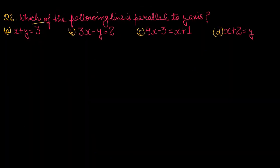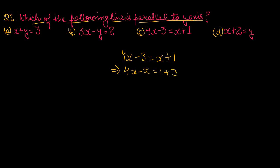Question number 2: which of the following lines is parallel to the y-axis? जो भी line y-axis के parallel होईगी, वो सिर्फ x की form की होईगी। x plus y equals to 3 नहीं हो सकती, 3x minus y equals to 2 भी नहीं। Third equation है 4x minus 3 equals to x plus 1, जो simplify होकर 3x equals to 4 बन जाती है, यानी x equals to 4 by 3। इसमें y का coefficient 0 है, तो option number C fit बैठ रही है। C is the correct one.